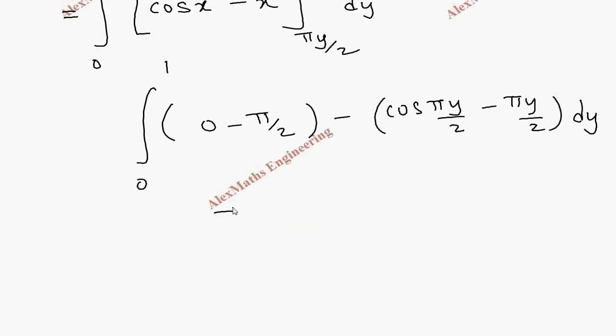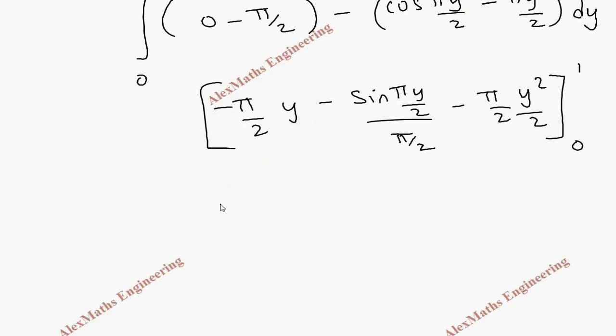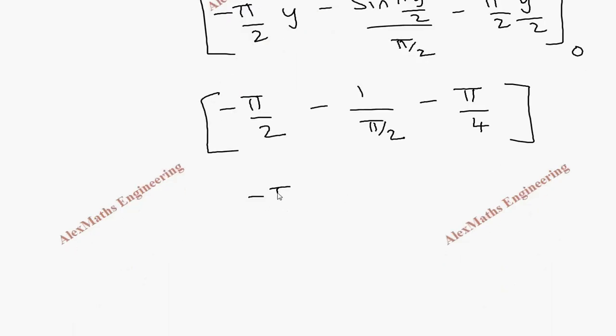Now this we have to integrate with respect to y. So this integration is minus pi by 2 y. And this is minus sin pi y by 2 by pi by 2. And this is minus pi by 2 into y square by 2. And we have to apply the limit 0 to 1. When we substitute the upper limit it is minus pi by 2. And this will become sin pi by 2 which is 1. So 1 by pi by 2 minus pi by 4.